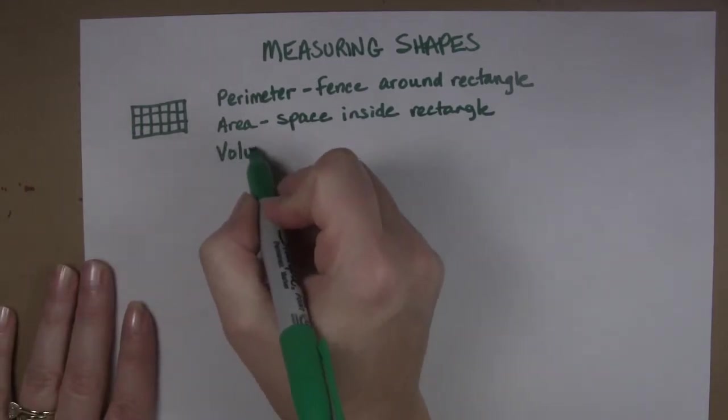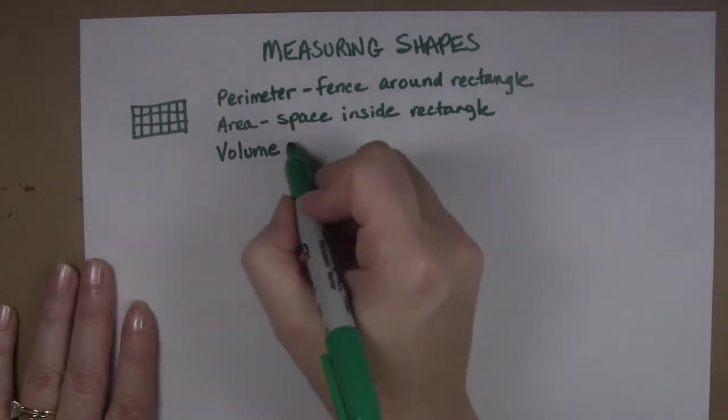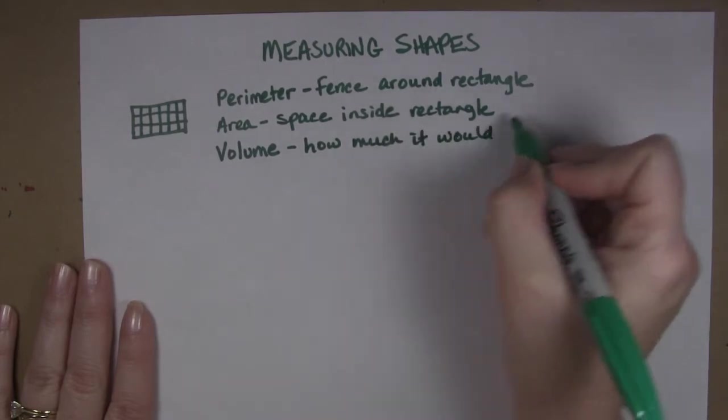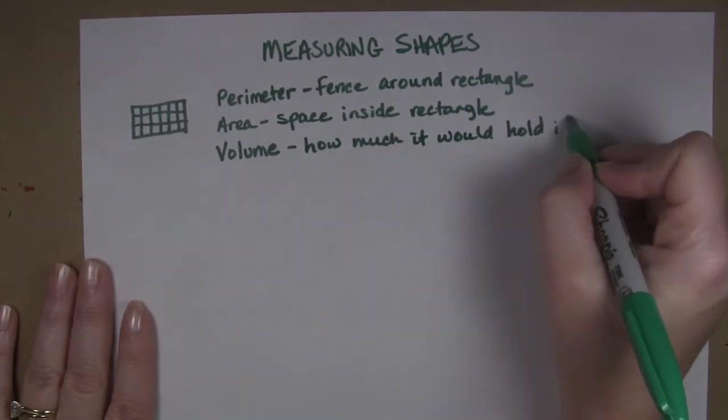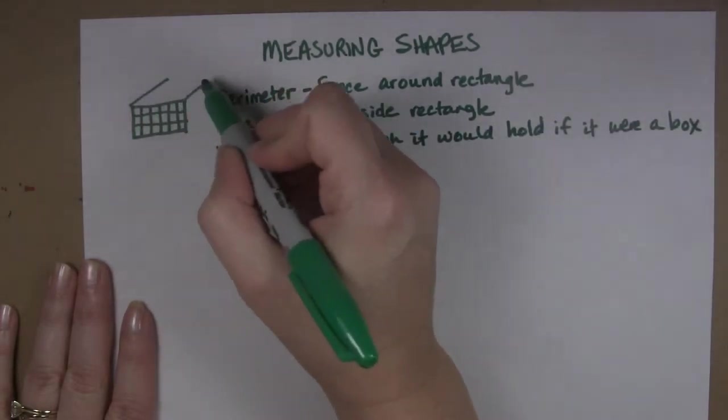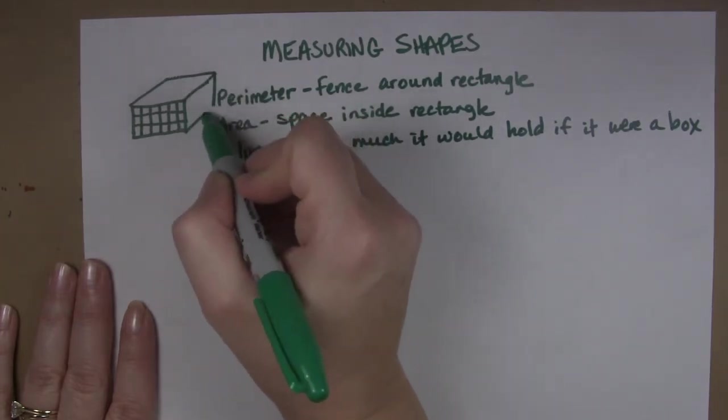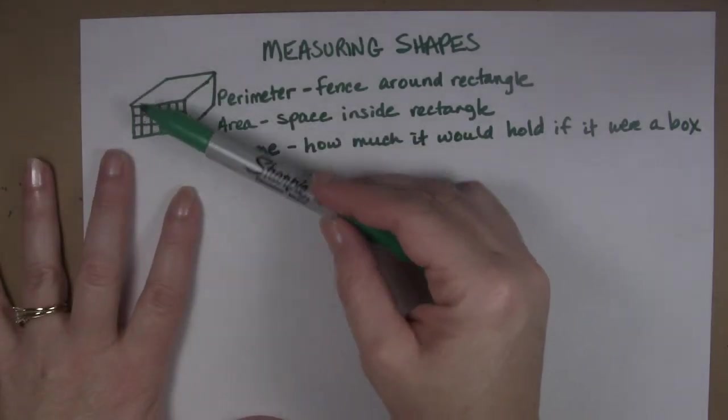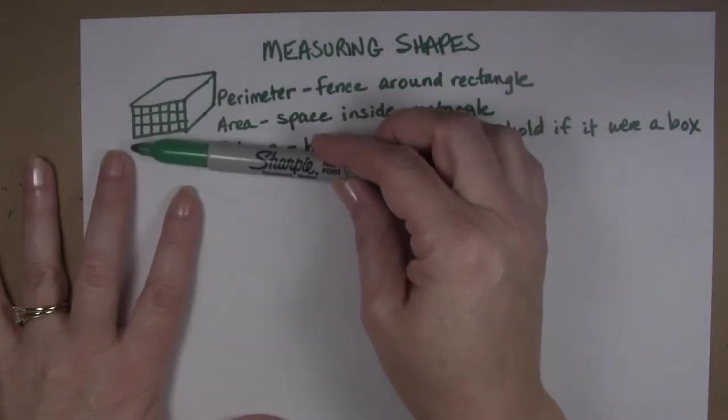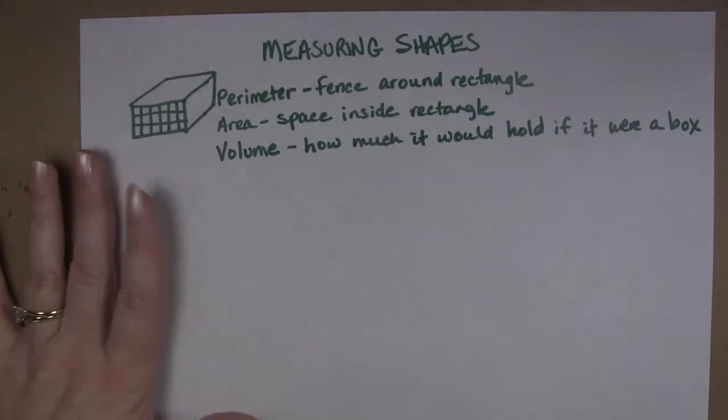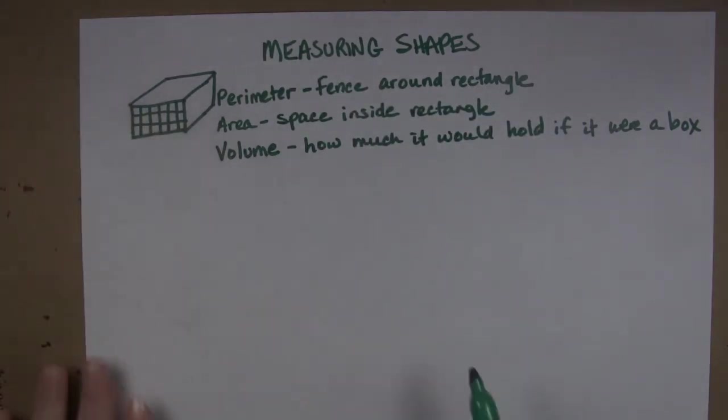Finally we could calculate the volume of the space which is how much it would hold if it were a box. So if I were to turn this into a box then I would have this slice of squares that are even and then I would have another slice of squares and another slice of squares going all the way back until I had filled up the entire box. That is what we mean when we talk about volume.